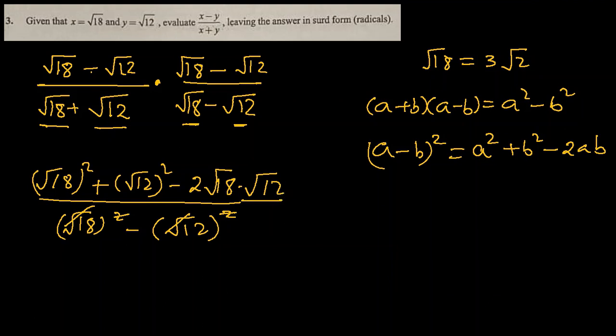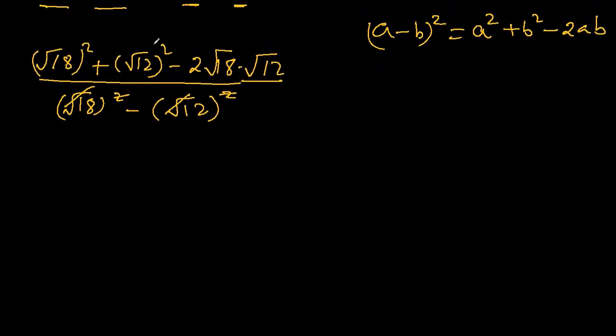So what does this give us? Let's cancel out the square roots first. Square and square root cancel out. This one cancelled out already. So, 18 plus 12 minus 2 square root 216. That's what the multiplication of 18 and 12 will be because they are square root. So the multiplication remains inside square root, 18 minus 12.